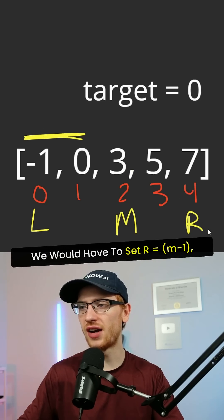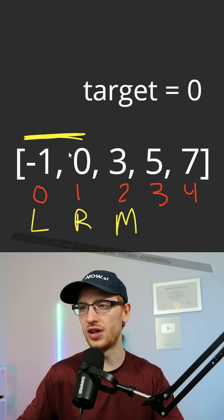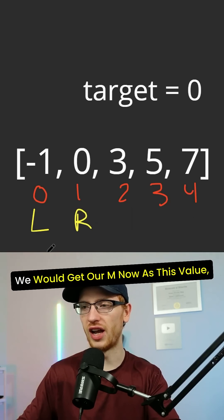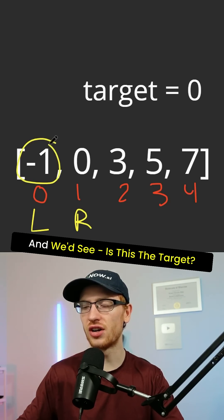So to search in this range, we would have to set R to be M minus 1 and then do this again. We would get our M now as this value and we'd see is this the target?